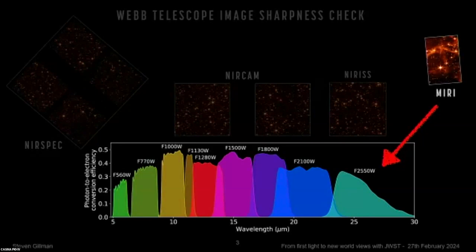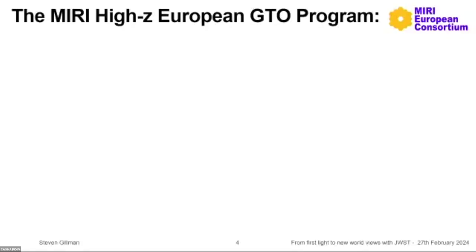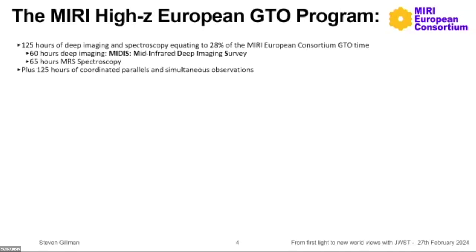If you want to study and discover the first galaxies in the universe, one of the best things you can do is take a deep field observation. As part of the MIRI European GTO team, this is what we did. We picked the Hubble Ultra Deep Field so that on top of the deep MIRI imaging you also get the previously-taken Hubble deep image. The GTO program has 125 hours total: 60 hours on the Hubble Ultra Deep Field — the MIRI Mid-Infrared Deep Imaging Survey — and 65 hours on spectroscopy targeting previously known high-redshift objects.